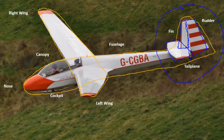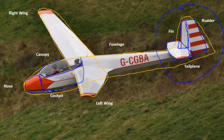We also talk about the nose at the front of the glider and the cockpit which is where the pilots sit, and on top of the cockpit the canopy.